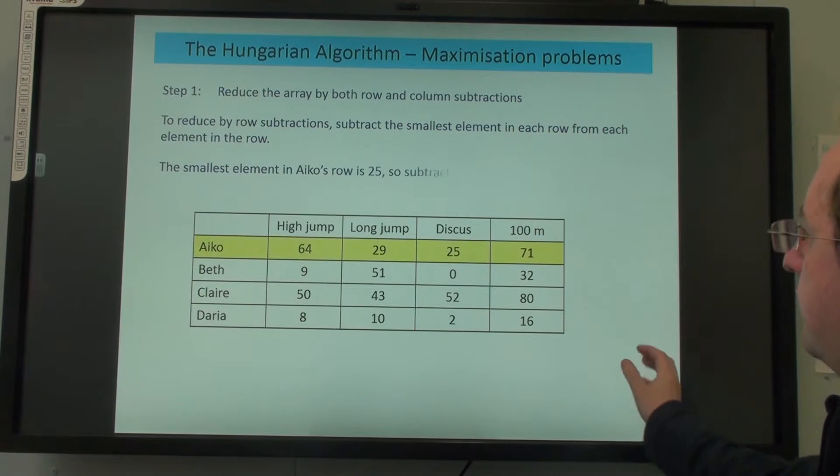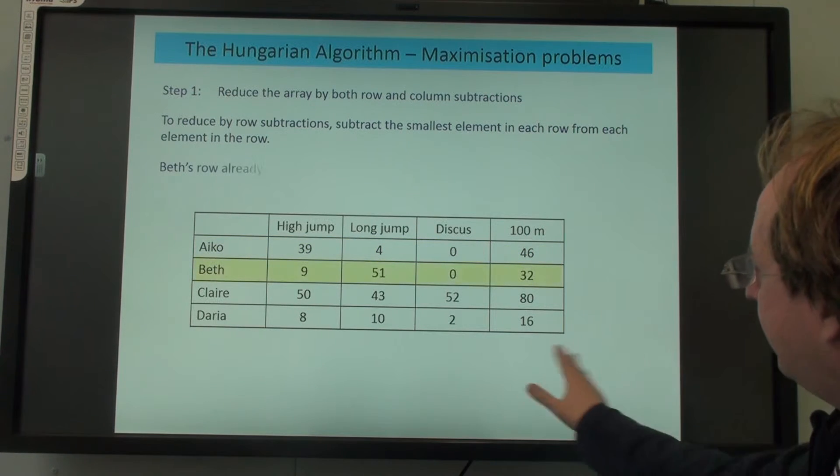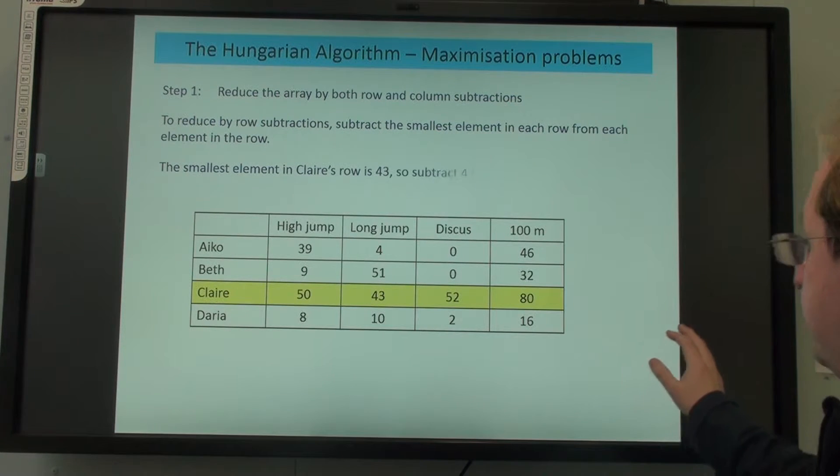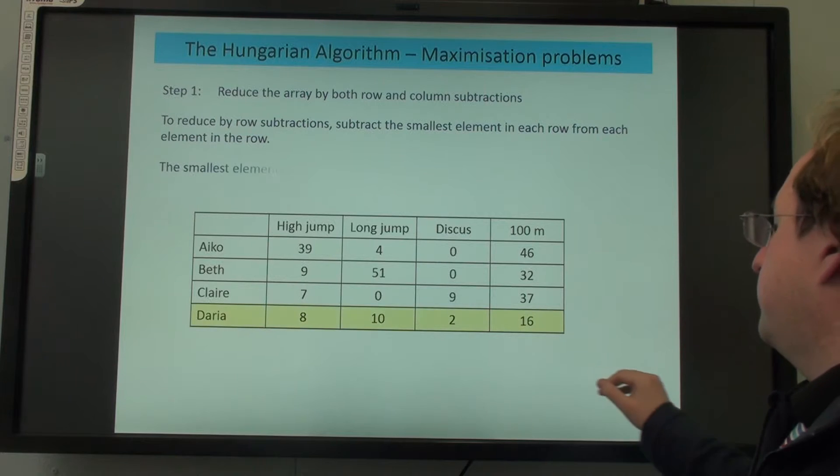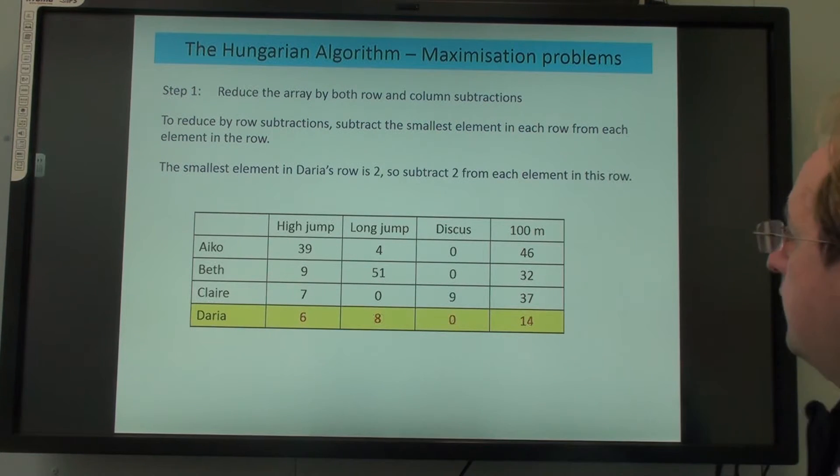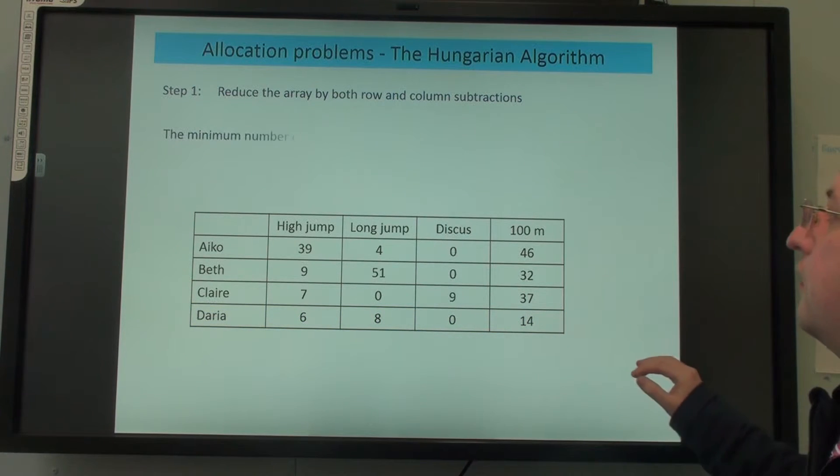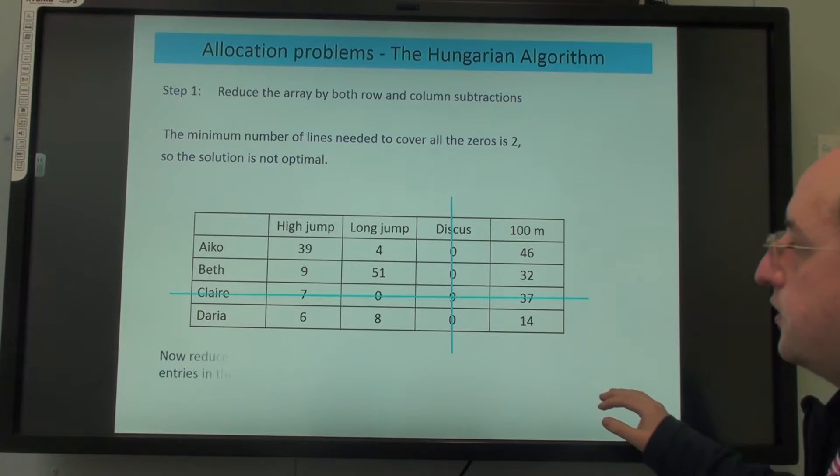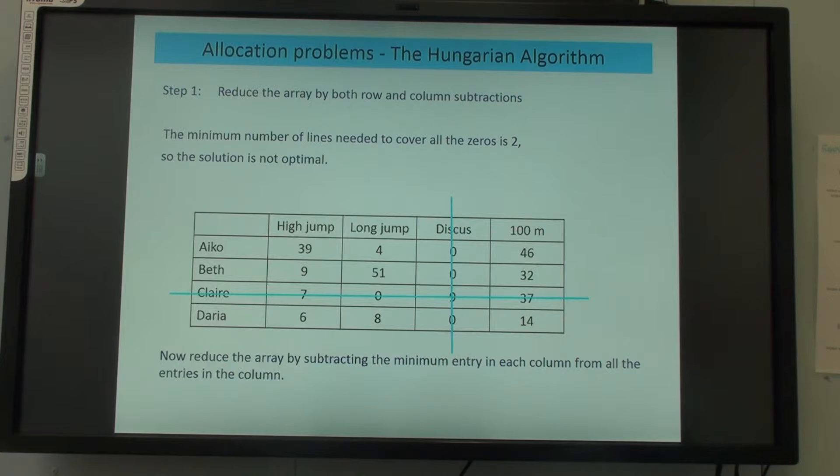Again, subtract the smallest element in each row like we have been doing. The smallest one in that one is 43, and then we subtract the smallest one in there which is 2. Once you've subtracted each row you look at the columns. You can do a check in the middle but there's no point doing that check in the middle.